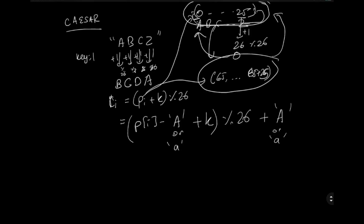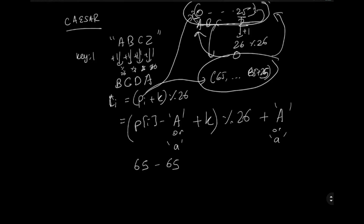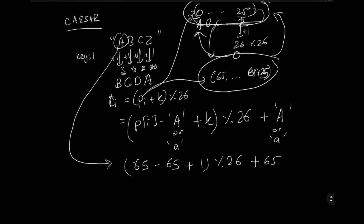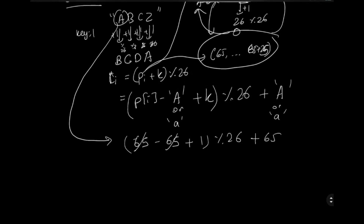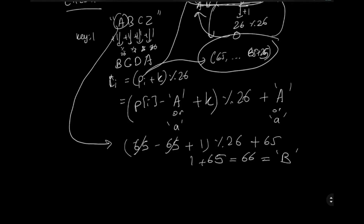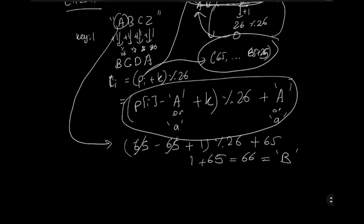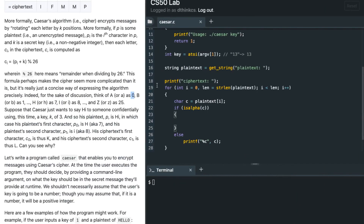For example, if 'A' is 65 and the key is 1: (65 - 65 + 1) mod 26 + 65 = 0 + 1 + 65 = 66, which is 'B'. You can work out more examples to convince yourself this formula works. For lowercase letters we use 'a' as the modifier instead of 'A'.